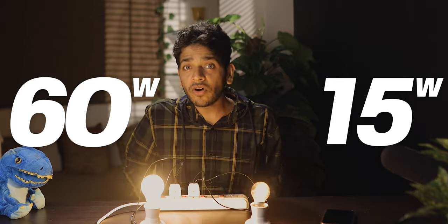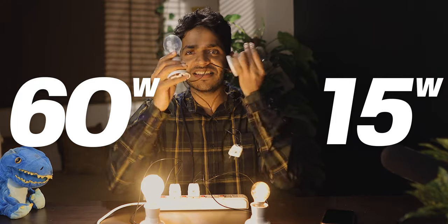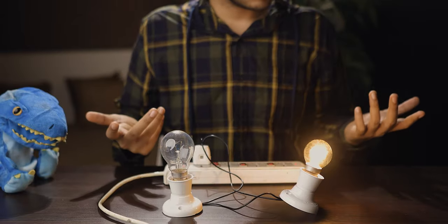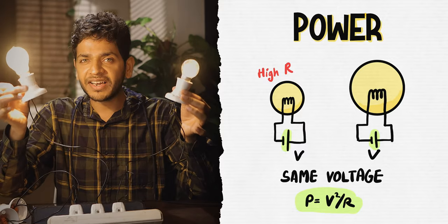A 60 watt bulb glows brighter than a 15 watt bulb, but what if we connect them in series? Then which one will glow brighter? It is connected in series but it is not glowing. What's happening when connected in parallel?